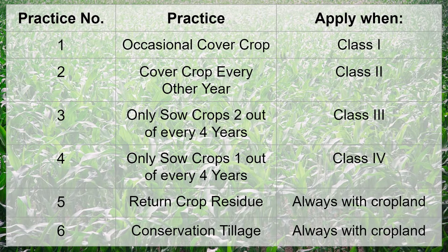Practices one through six. Practice number one: occasional cover crop — apply when your land is class one. Practice number two: cover crop every other year — apply when your land is class two.